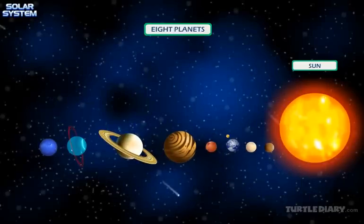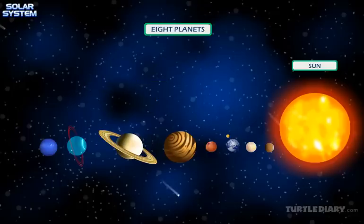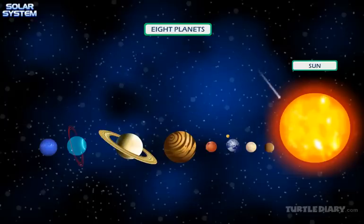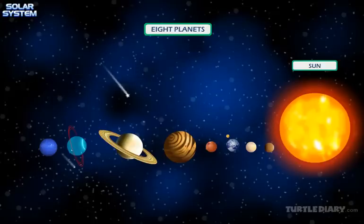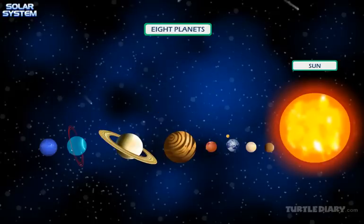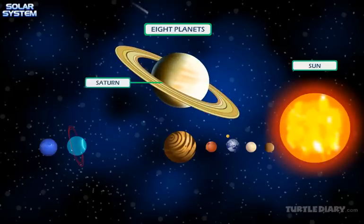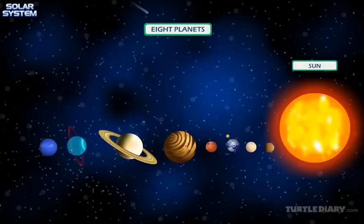There are eight planets in our solar system. They are Mercury, Venus, Earth, Mars, Jupiter, Saturn, Uranus, and Neptune.